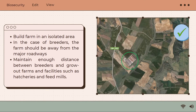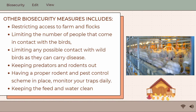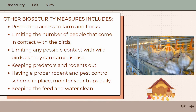In the case of breeders, the farm should be away from the major roadways that may be used to transport commercial and backyard poultry. Maintain enough distance between breeders and grow-out farms, and facilities such as hatcheries and feed mills.